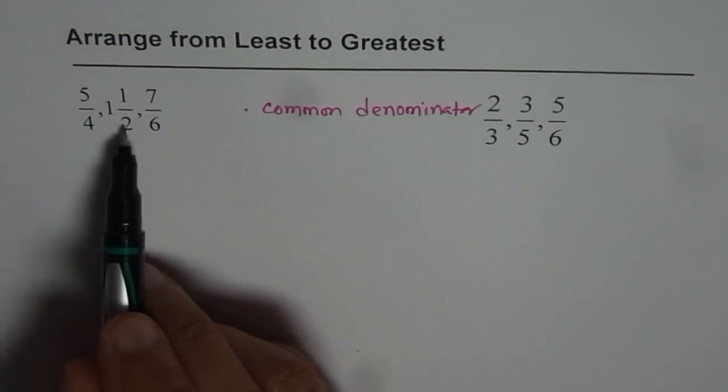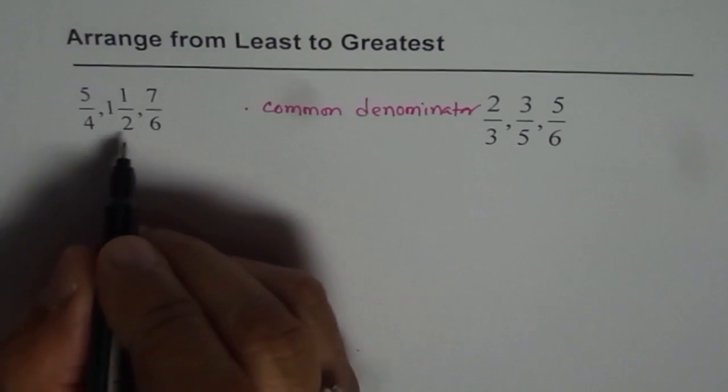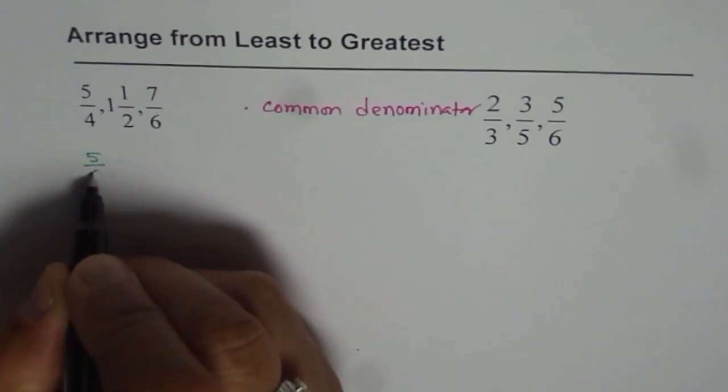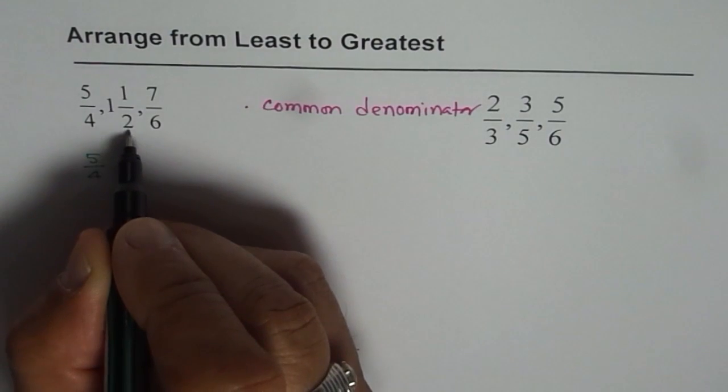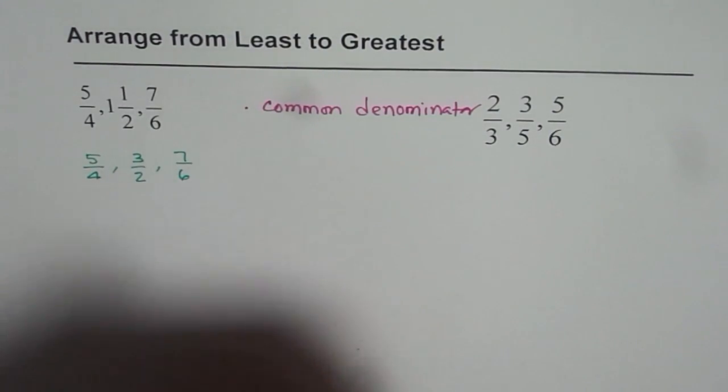So in this particular case, well there is one mixed fraction. So it is a good idea to write them all as improper fractions. So we have 5 over 4 and then 2 times 1 is 2 plus 1, 3 over 2 and then we have 7 over 6.